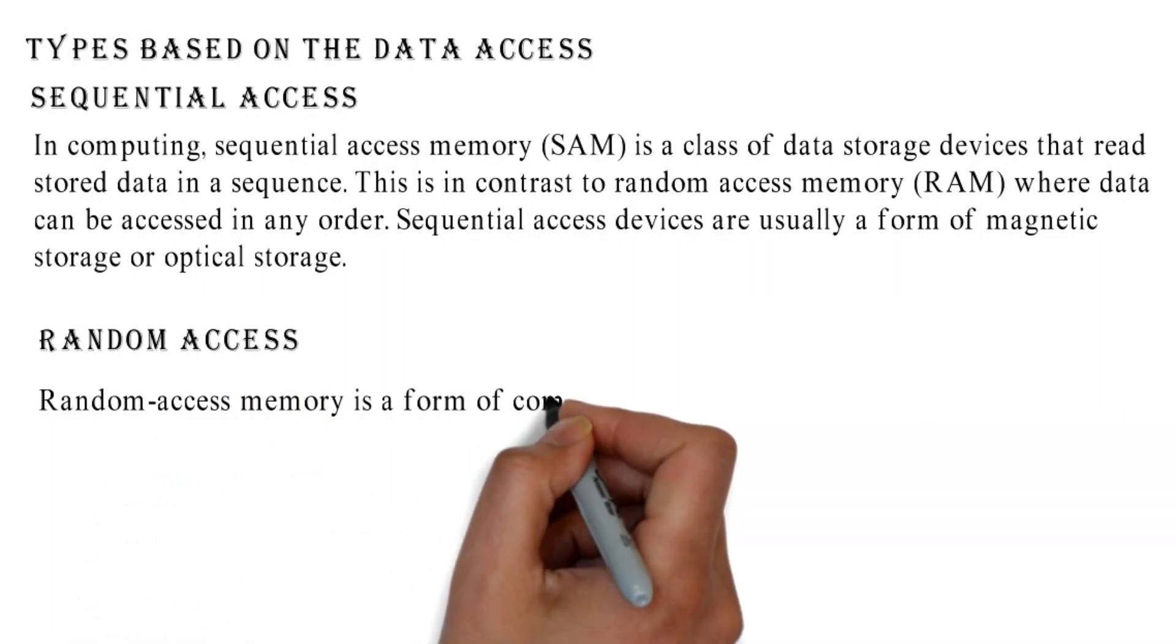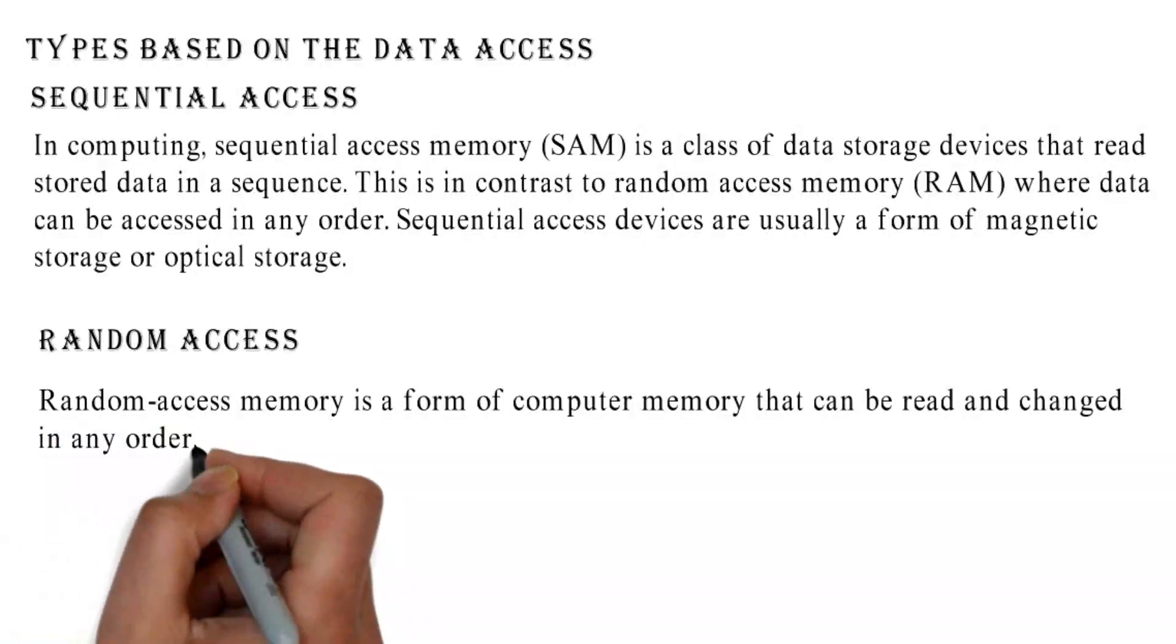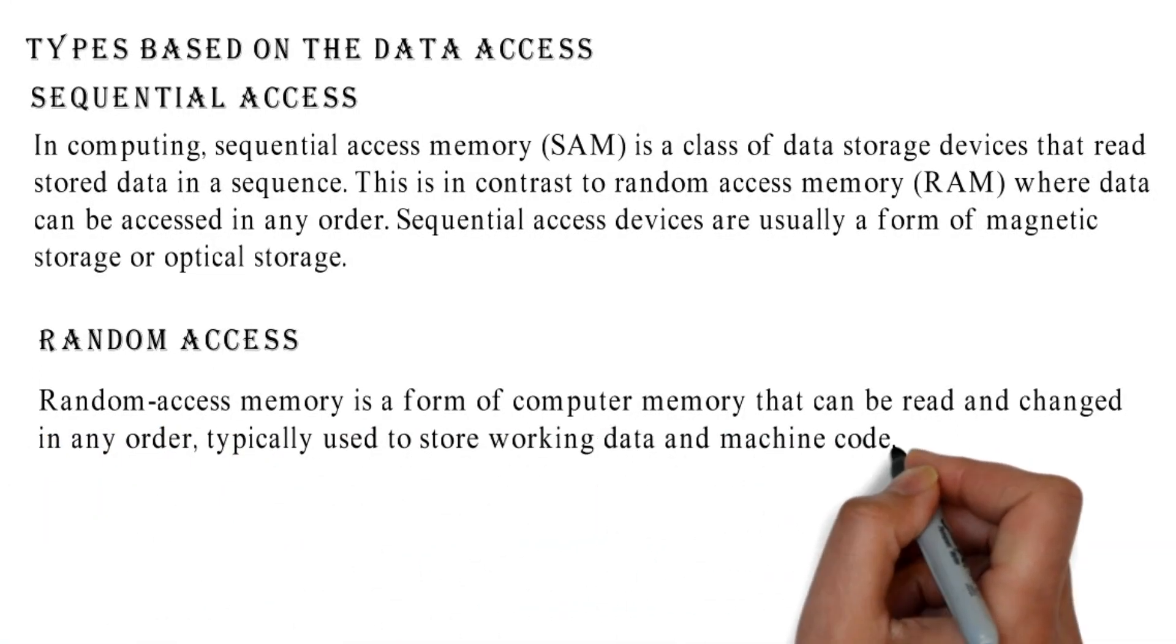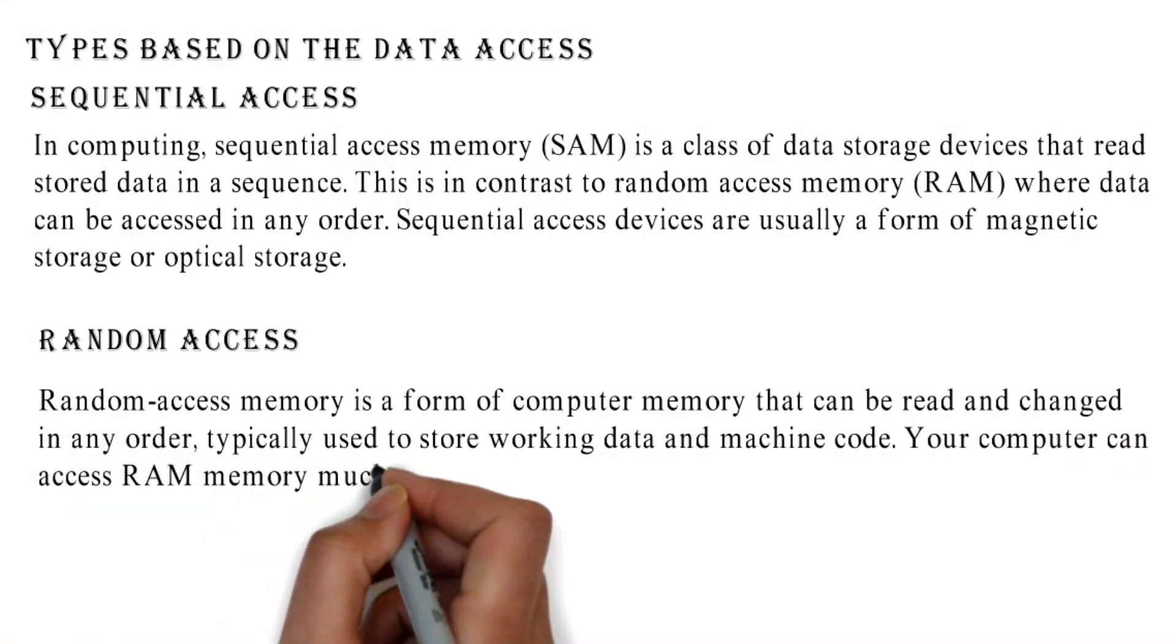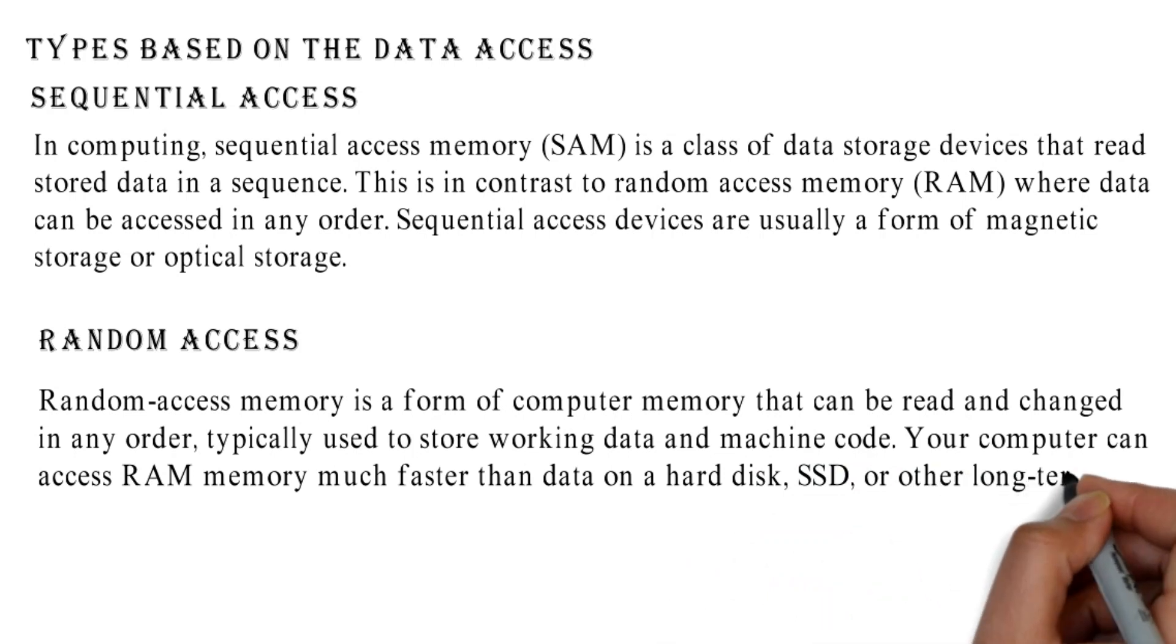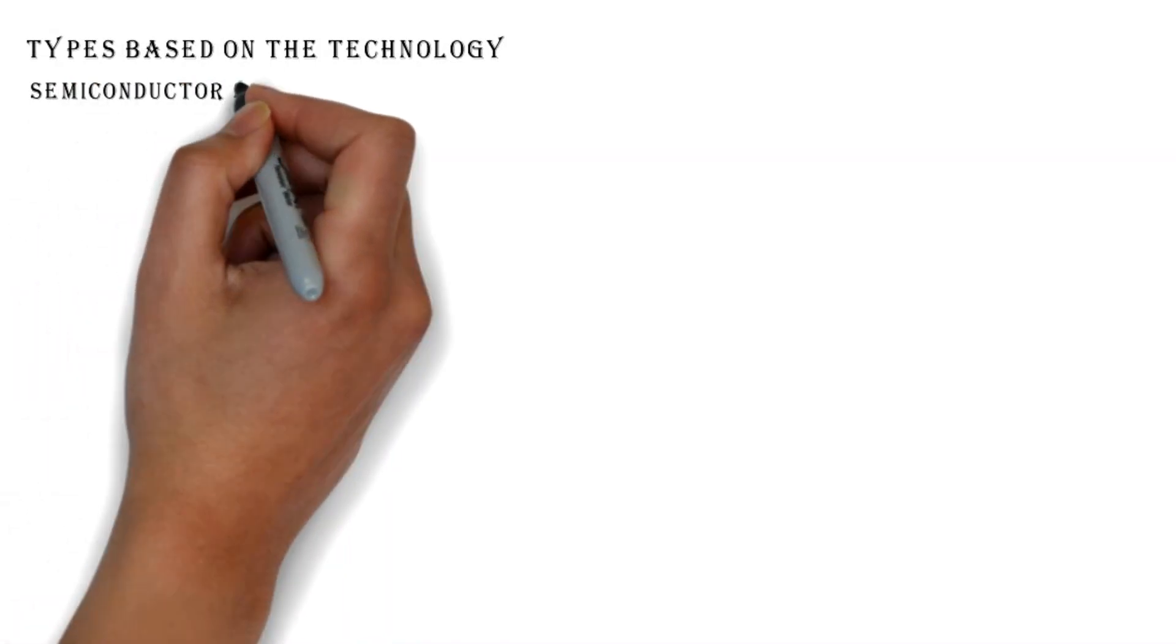Random access memory is a form of computer memory that can be read and changed in any order, typically used to store working data and machine code. Your computer can access RAM memory much faster than data on a hard disk, SSD, or other long-term storage device.